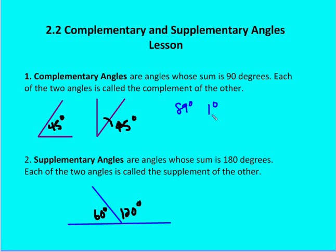Supplementary angles are angles whose sum is 180 degrees — they form a straight angle. Each of these two angles is called the supplement of the other. Here I have one angle measuring 60 degrees and one measuring 120 degrees; they form a straight angle together and the sum is 180 degrees. The angles don't have to be adjacent — they don't have to share a common ray — but if you put them next to each other, they'll create a straight angle in the case of supplementary angles, or a right angle in the case of complementary angles.